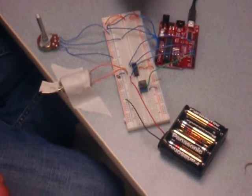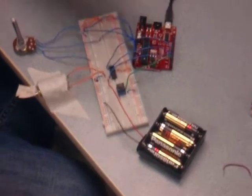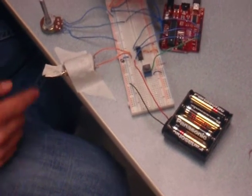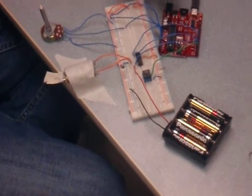I hooked up this motor to a potentiometer and a button. The button is supposed to reverse the direction of whatever the motor is already going, and the potentiometer is going to regulate the speed.